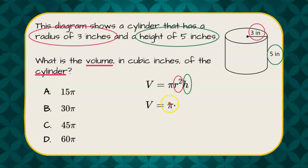Volume equals pi times r squared, so three squared times the height, which is five. Three squared is nine. Nine times five is 45, and 45 times pi gives us an answer of C.